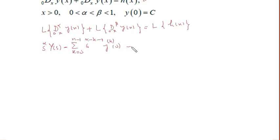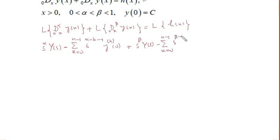We need to apply it again for the second differential term. So it becomes s to the power beta times Y(s) minus the summation from k=0 to n−1 of s to the power (beta − k − 1) times the k-th derivative of y at 0, and this is equal to H(s), where H(s) denotes the Laplace transform of h(x).